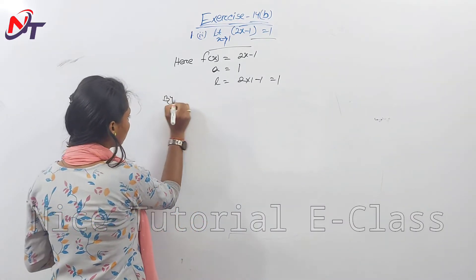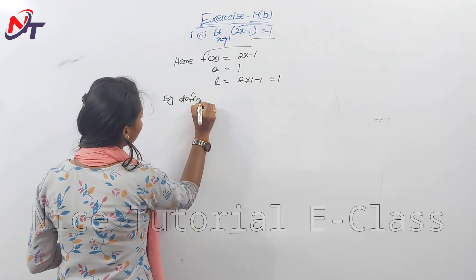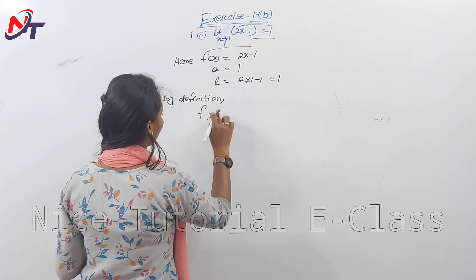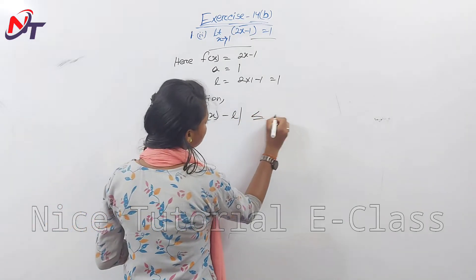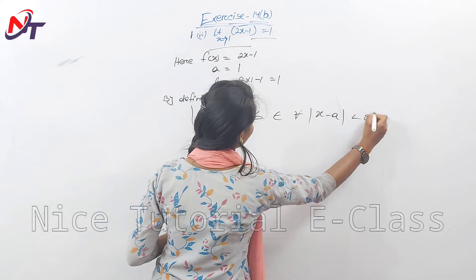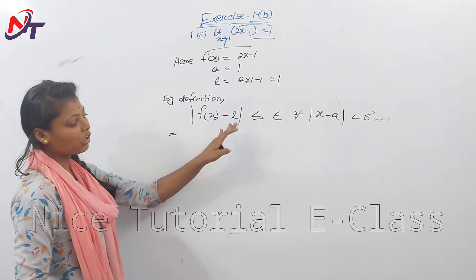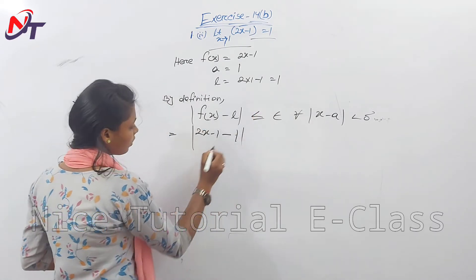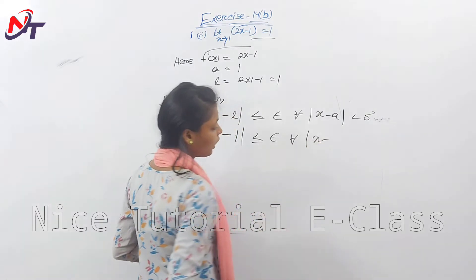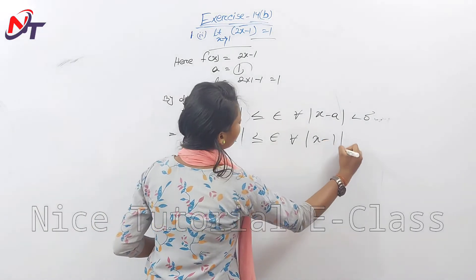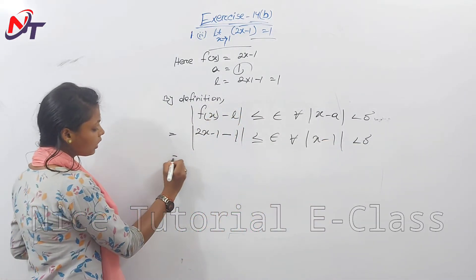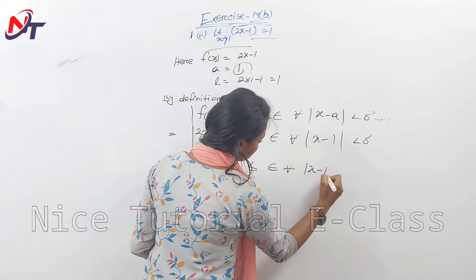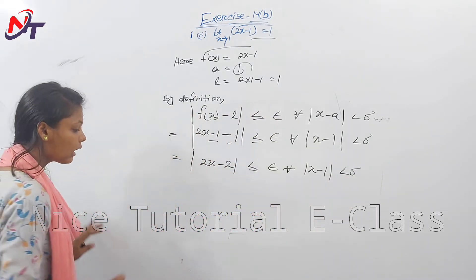Then by the epsilon-delta definition, the limit as x → 1: |f(x) - L| = |2x - 1 - 1| < ε for all |x - 1| < δ. So |2x - 2| < ε for all |x - 1| < δ.